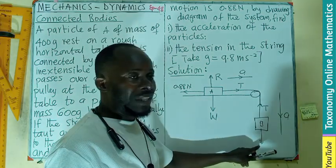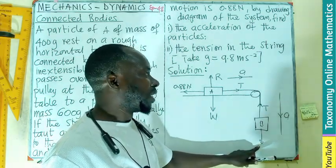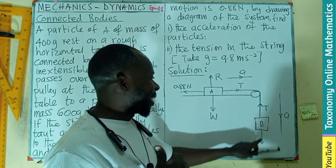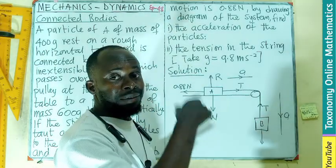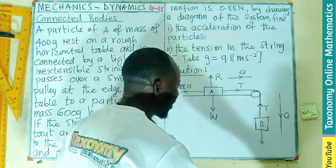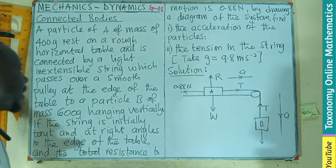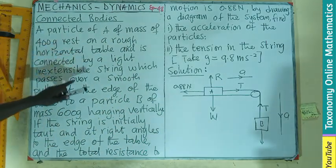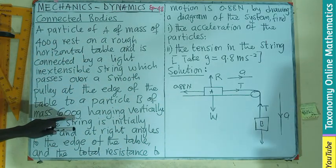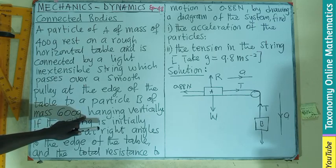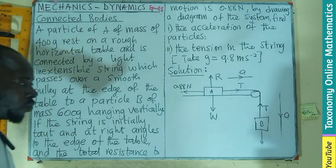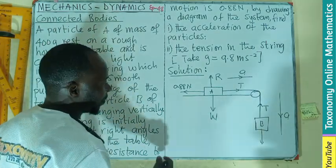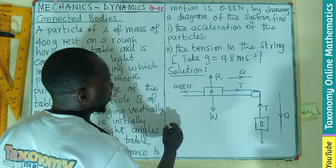I should also have acceleration. These accelerations are common to the first body and the second body. The tensions are also common. This is going to be the weight of the body B, which is going to be the mass of the body times acceleration due to gravity.